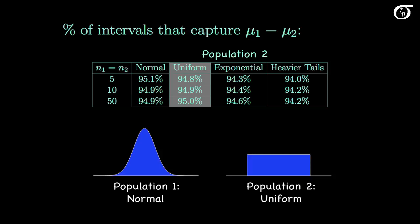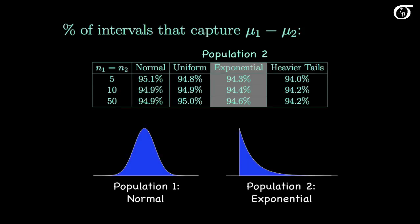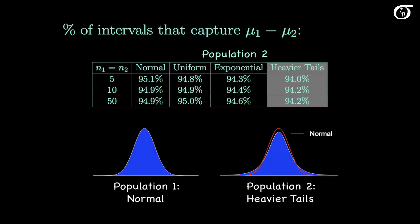When population 1 is normal but population 2 is uniform, the estimated coverage percentages are close to 95% even for small sample sizes, so the procedure works very well. When we incorporate some skewness in population 2 with the exponential distribution, it's not a major problem — unlike one-sample t procedures where strong skewness causes issues, in the two-sample case having one skewed population is not very harmful. If population 2 has heavier tails than a normal distribution, there is a slight negative effect, with coverage percentages a little bit lower than 95%.